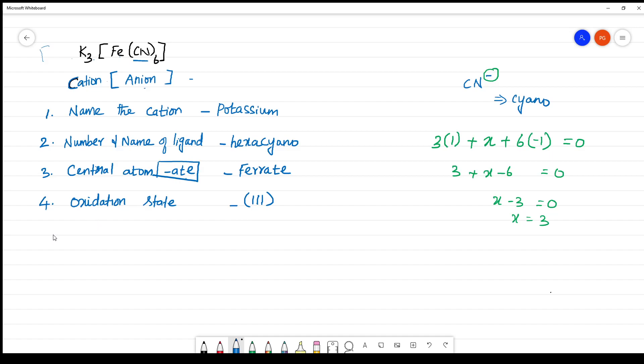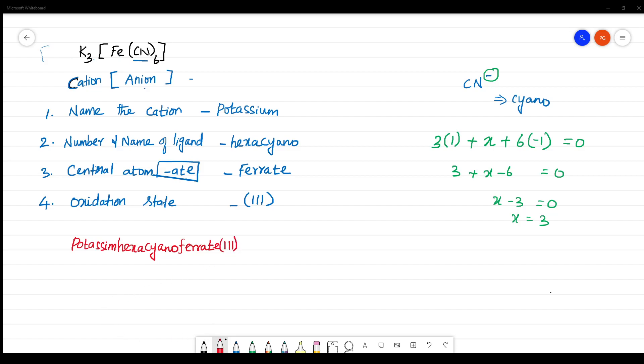So finally, you have to write the name of the complex. What is the name of the complex now? First is potassium. You should not give gap or you should not write in capital letters. Potassium, hexa, cyano, ferrate, (III). So this is the name of the complex. Thank you.